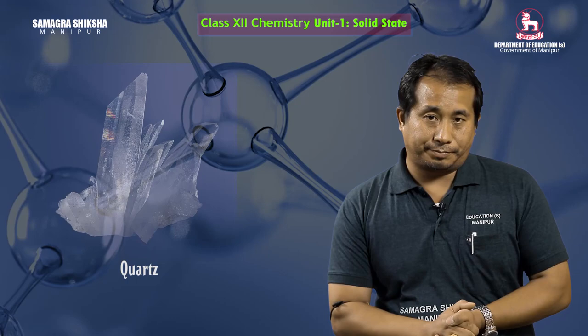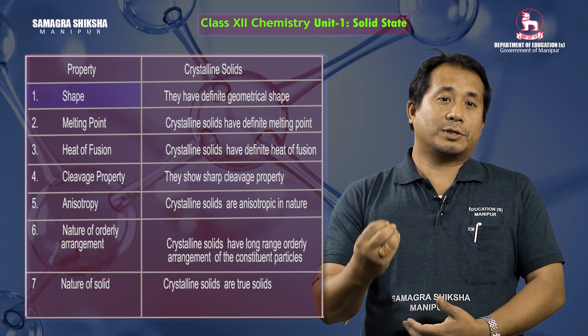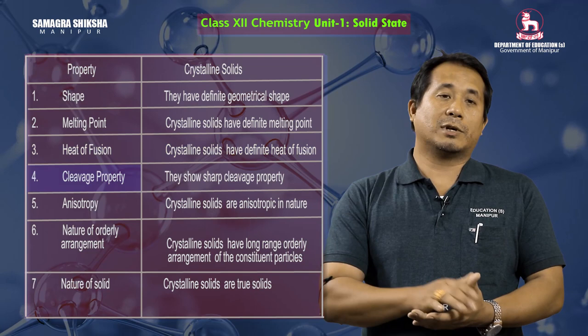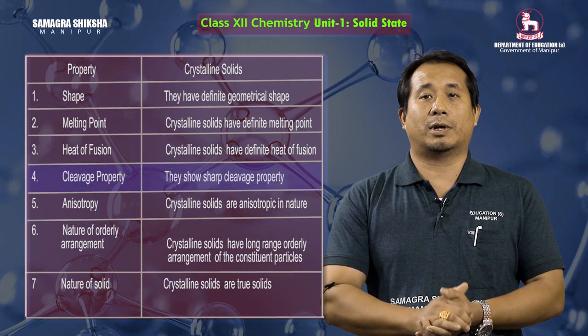Crystalline solids have some characteristic properties. Shape: they have definite geometrical shape. Melting point: they have a definite melting point. Heat of fusion: they have definite heat of fusion. Cleavage property: they show sharp cleavage property, with clean and neat surfaces.